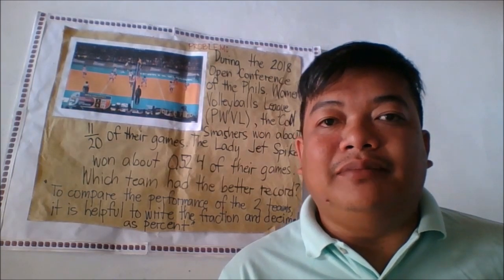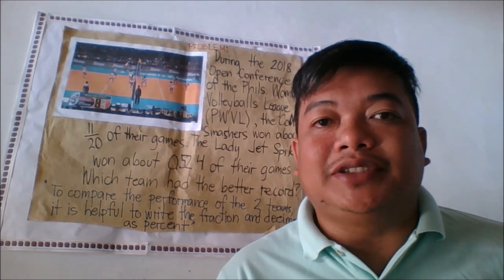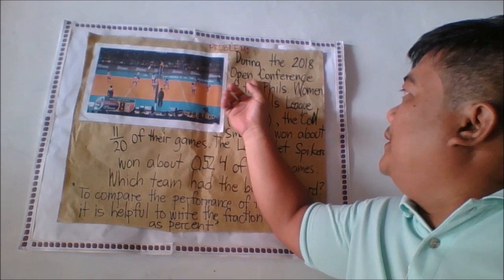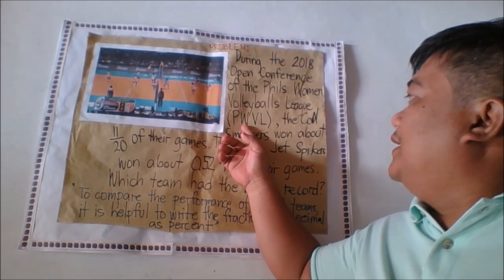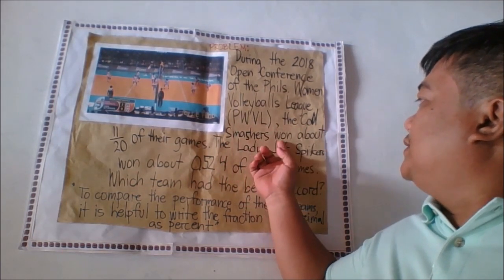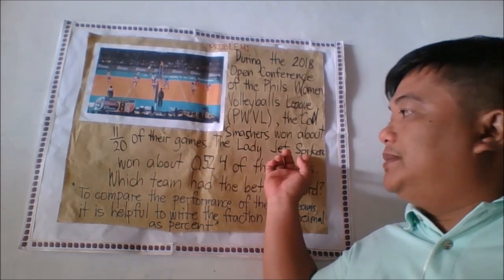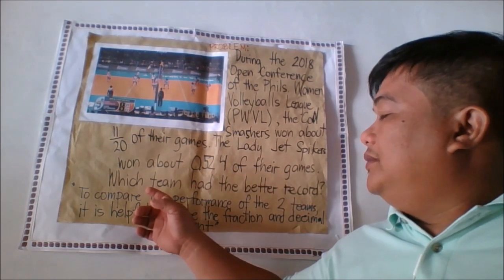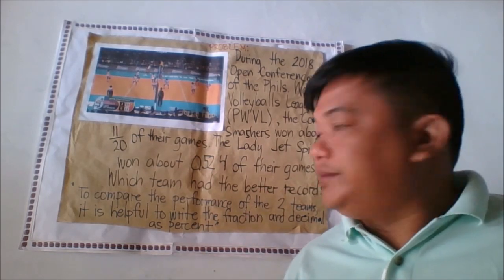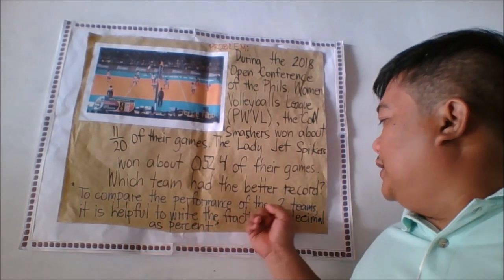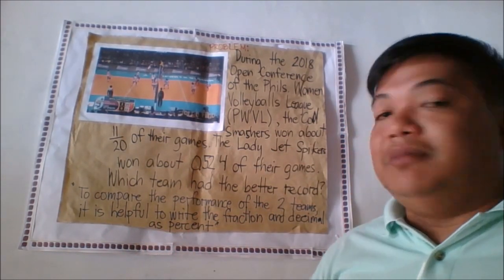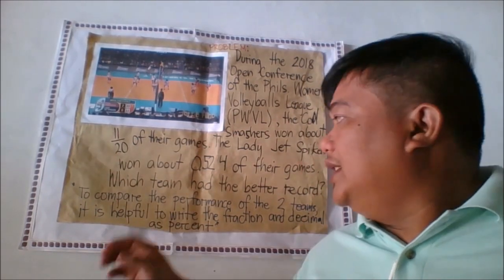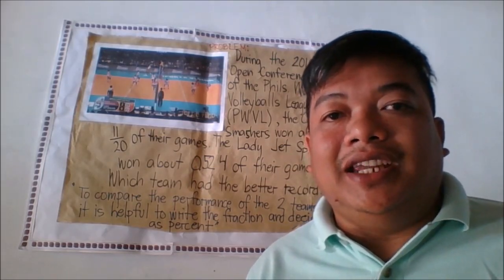Let us try this example on how to write fractions and decimals to percent. During the 2018 Open Conference of the Philippines Women's Volleyball League (PWVL), the Coal Smashers won about 11/20 of their games. The Lady Jets Spikers won about 0.524 of their games. Which team had the better record? To compare the performance of the two teams, it is helpful to write the fraction and decimal as percent.